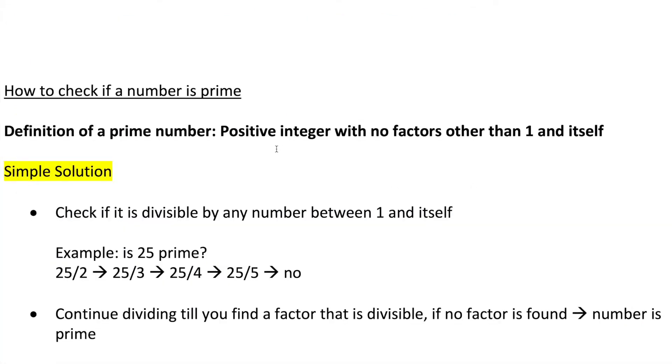The definition of a prime number is a positive integer with no factors other than 1 and itself. So to check if a number is prime, a simple solution would be to check if it is divisible by any number between 1 and itself.